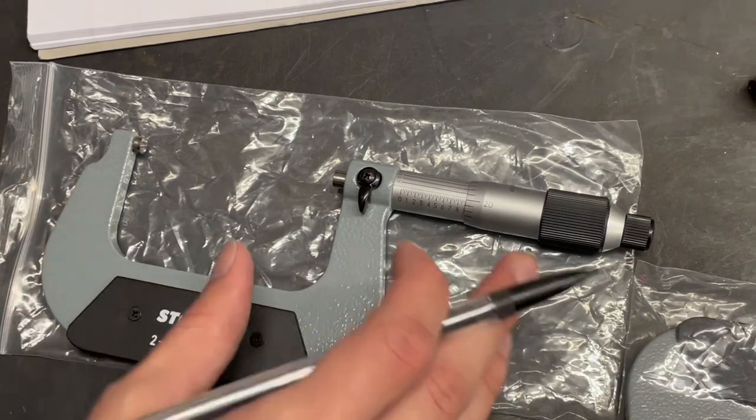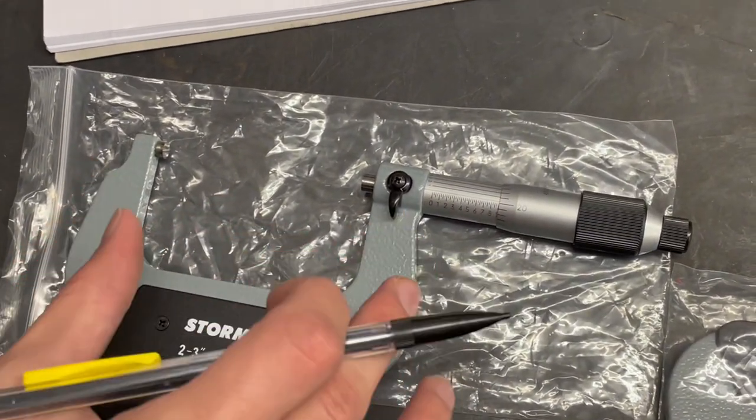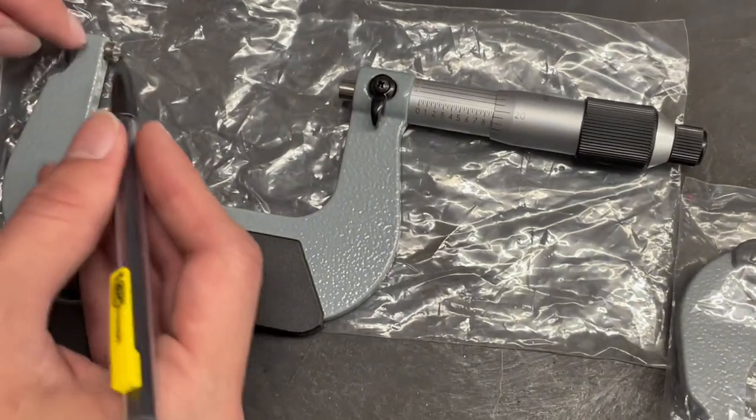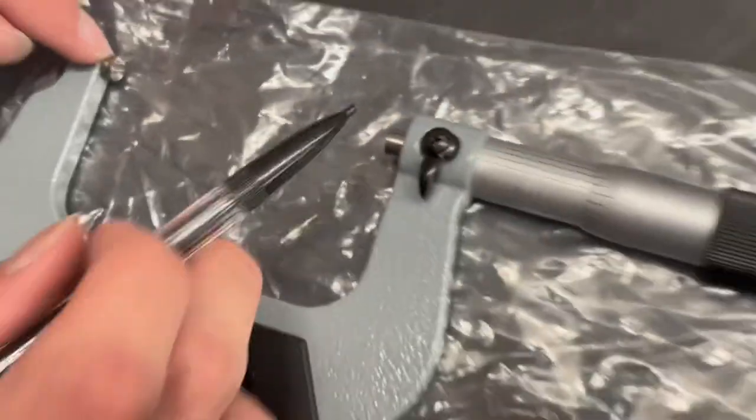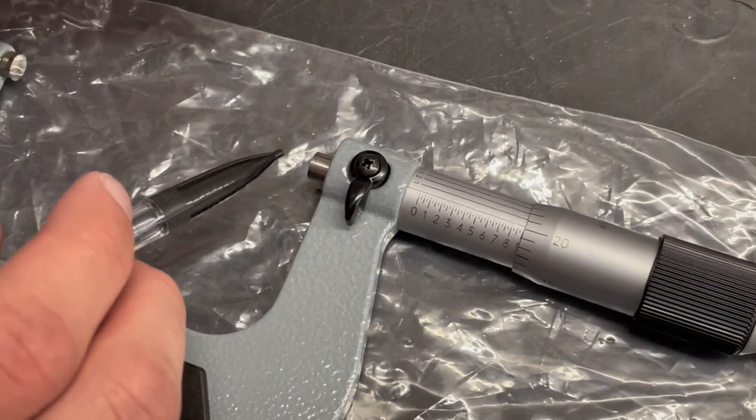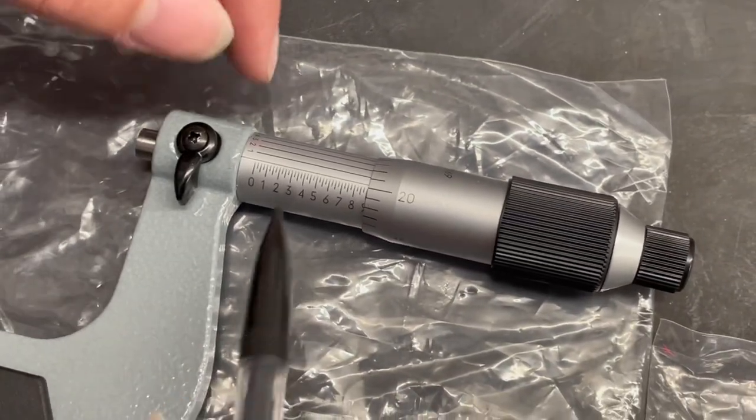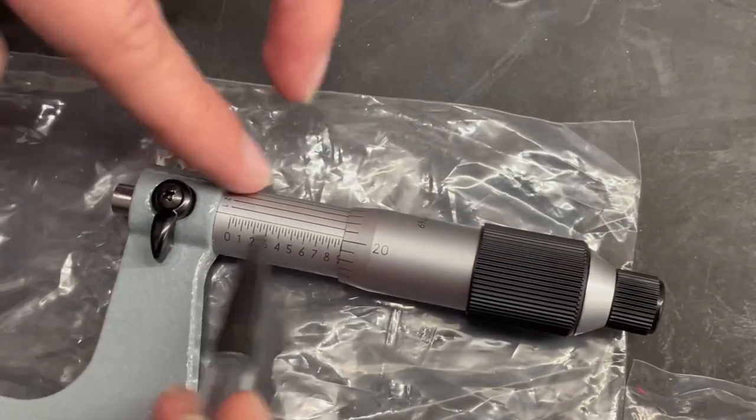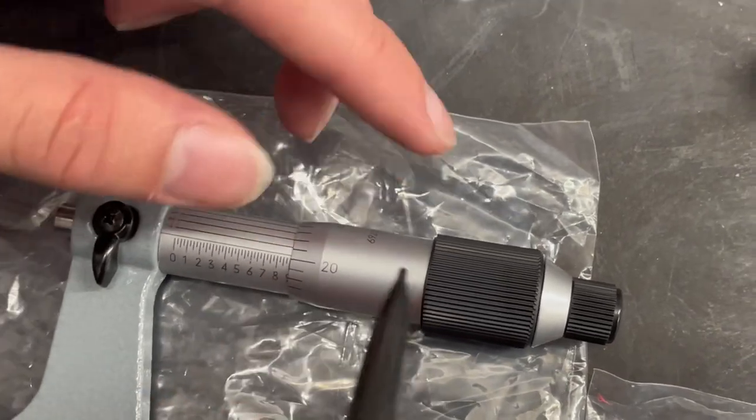So this is the micrometer. This U-shaped horseshoe looking thing is the frame. Right here this little steel bit is the anvil. This little metal bit sticking out right here on the right side is the spindle. This is attached to the barrel assembly. On the barrel, this whole thing's called the barrel, we have the sleeve and we have the thimble.